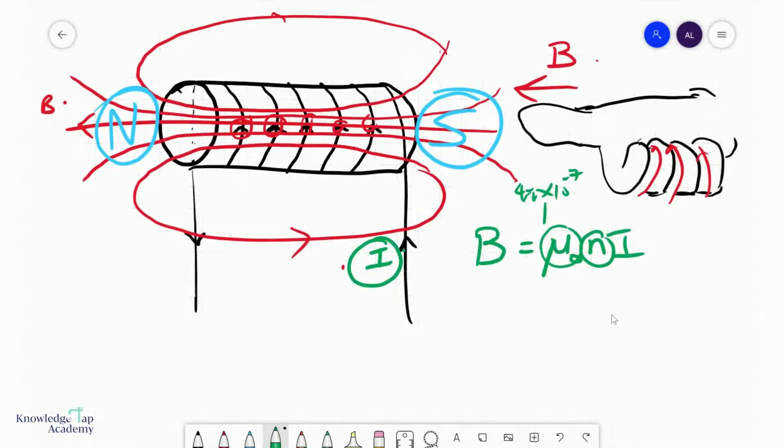Turns per unit length, not the number of turns. That is actually a common mistake. And so you can think of it as the total number of turns in the solenoid divided by the length of the solenoid. Think of it more like a turns density. And so the flux density of a solenoid is not dependent on how many turns it has but rather on how close the turns are together.